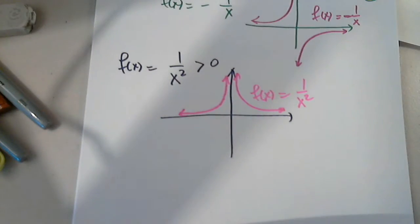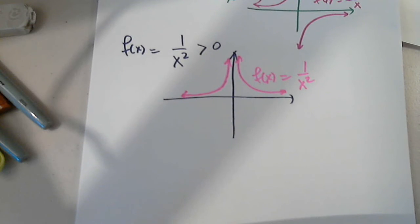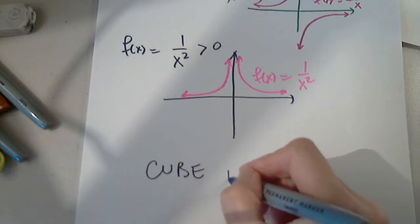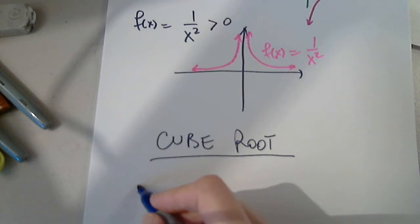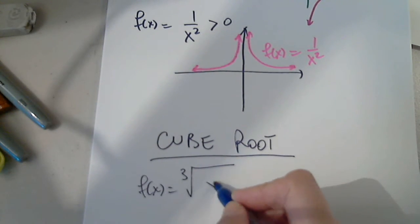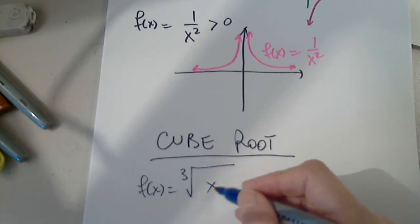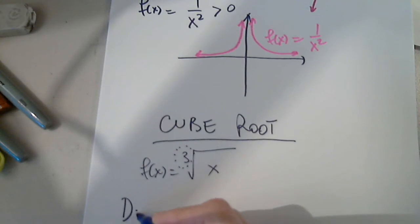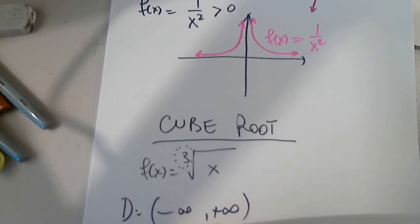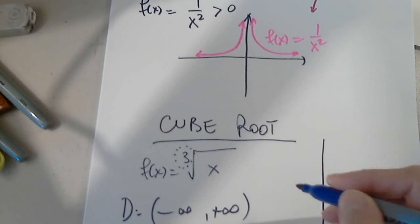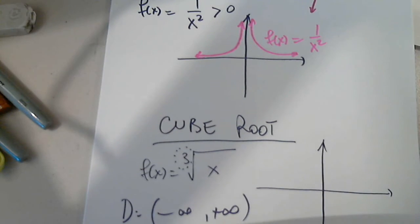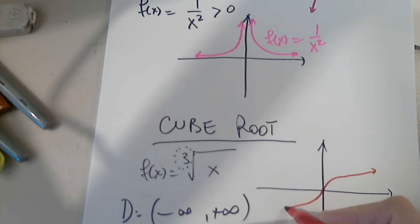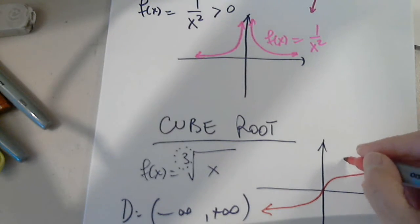Let me also show you the cube root. The cube root function is f of x equals the cube root of x. This is a nice function because there are no restrictions on x. If the index is odd, there are no restrictions, so the domain is negative infinity to positive infinity, and the range is also negative infinity to positive infinity. Every odd index — no headache whatsoever. And here's the graph of the cube root of x.